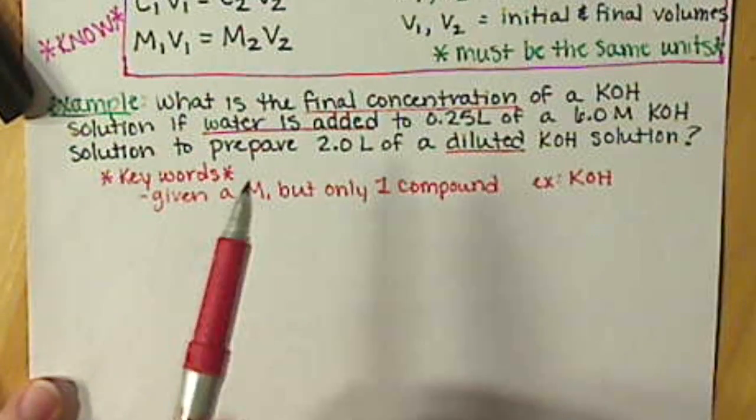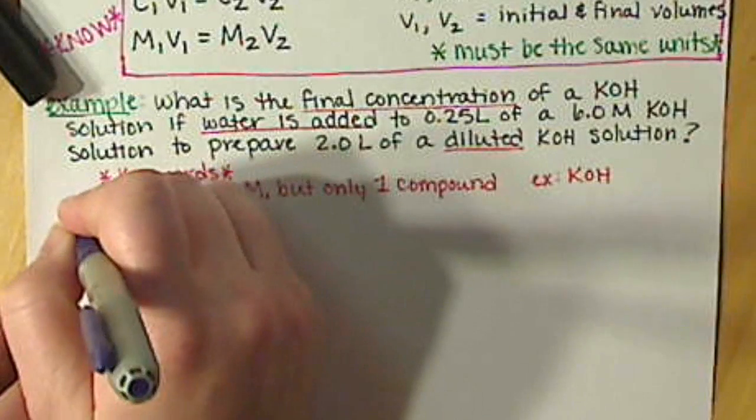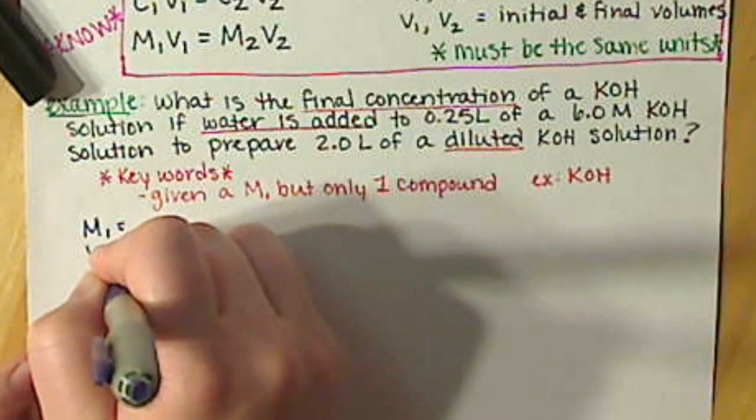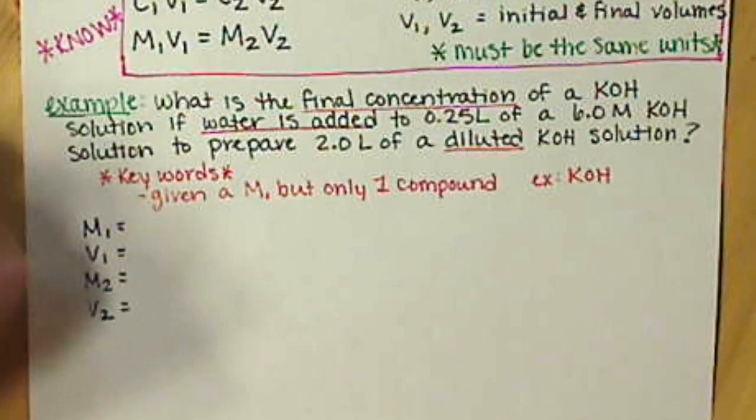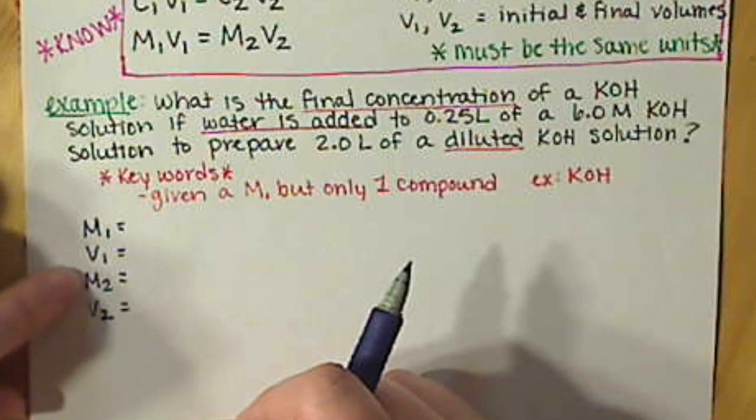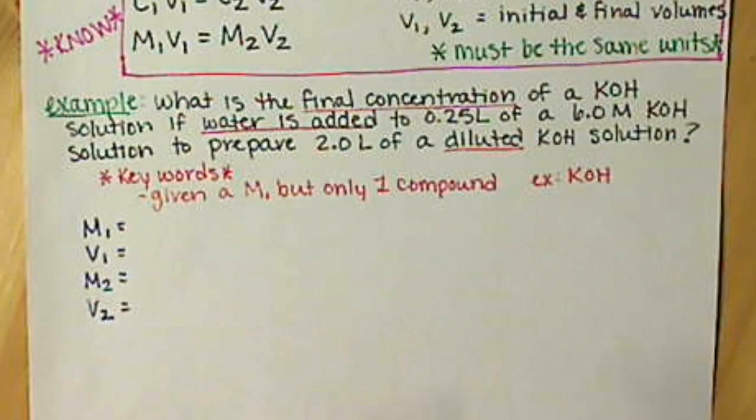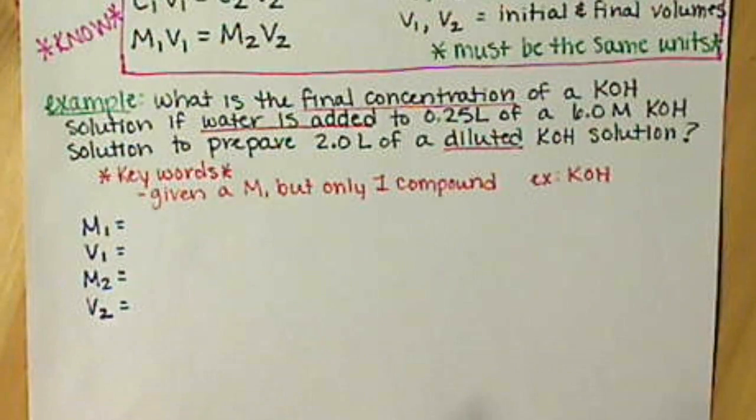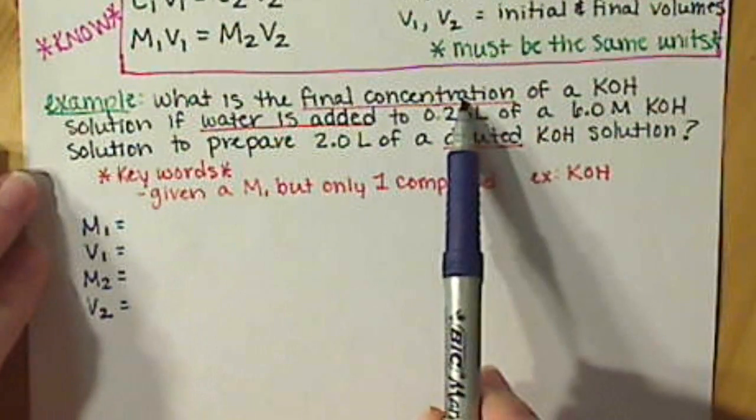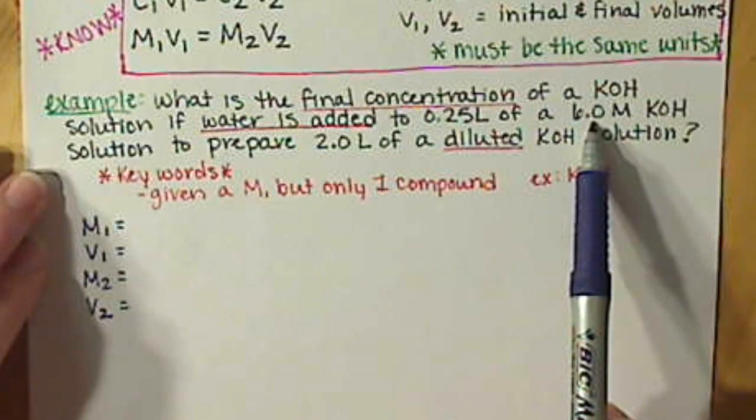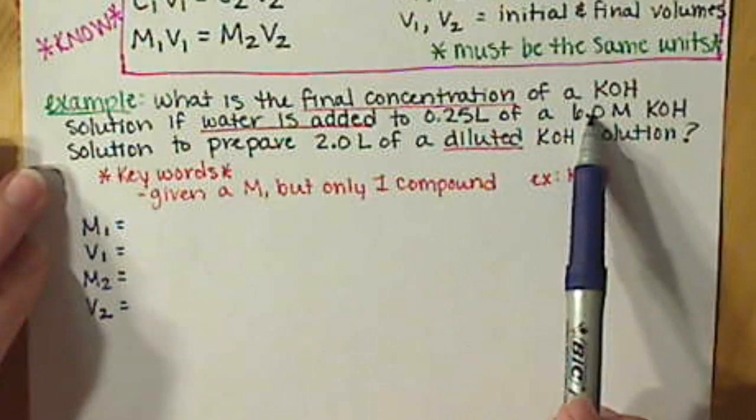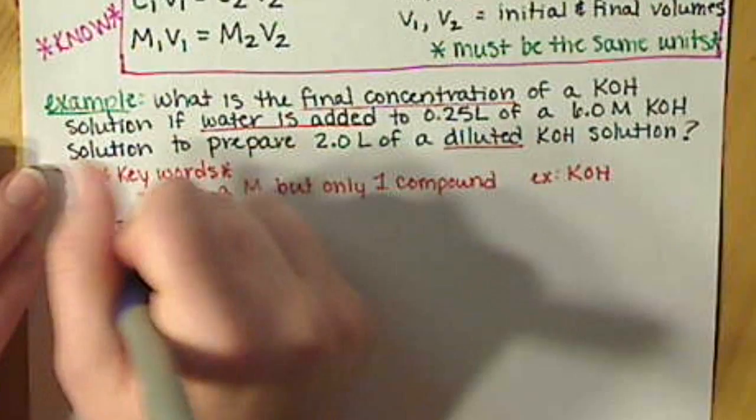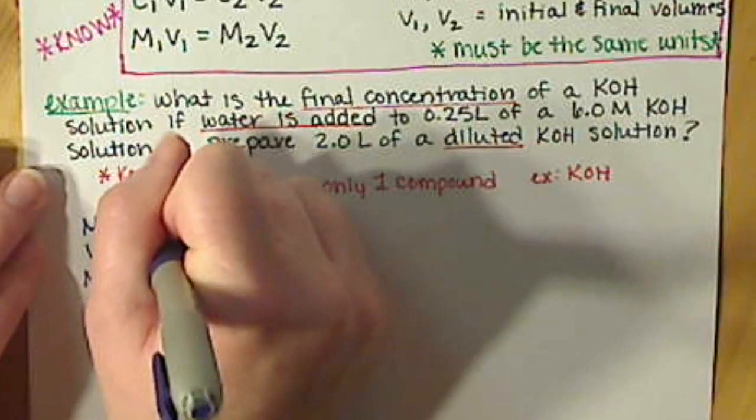We want to focus on using our dilution equation. I treat it a lot like I do the ideal gas equation. I like to give myself a list, see what information I have. The ones and the twos, the ones represent your initial state, the twos represent your final state, but it doesn't really matter which way you put those, as long as the values, your molarity and volume, are paired together and stay together. We are starting with 0.25 liters of a 6 molar potassium hydroxide solution, so this volume and this molarity need to stay together. We have 0.25 liters and 6.0 molar.